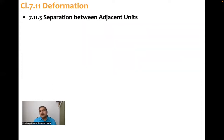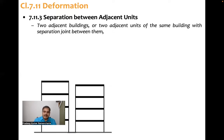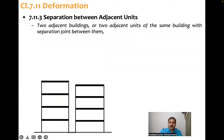Next coming to the third subsection, that is separation between adjacent buildings. So two adjacent buildings or two units, two adjacent units of the same building with separation joint between them like this.